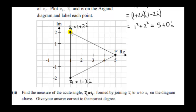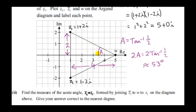Next we find the acute angle z1 bar w z1, where z1 bar w is one arm and w z1 is the other arm. The easiest way is to calculate angle A in the right-angled triangle. The side opposite A is 2 units long, the side adjacent is 4 units long, so tan of A is 2 over 4. A is inverse tan of one half. By symmetry, the angle below also has size A. So we multiply 2 by inverse tan of a half, and rounding to the nearest degree we get 53 degrees.